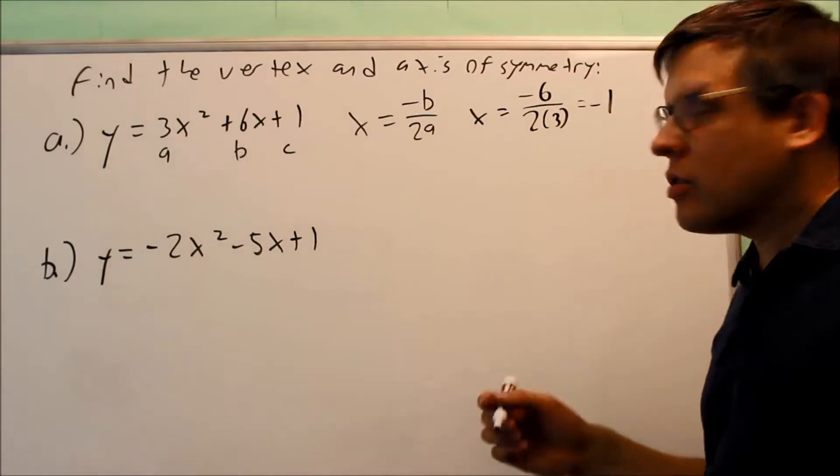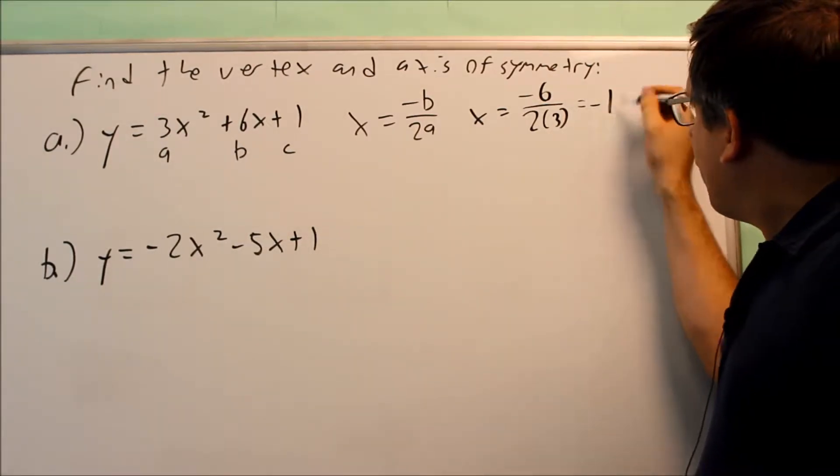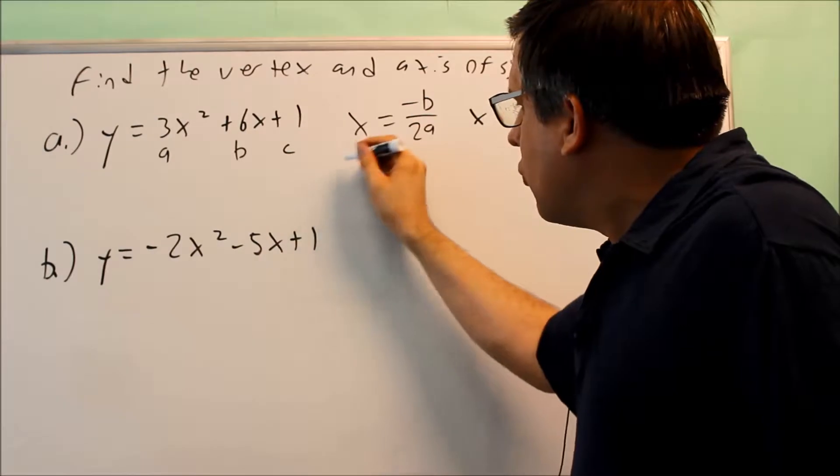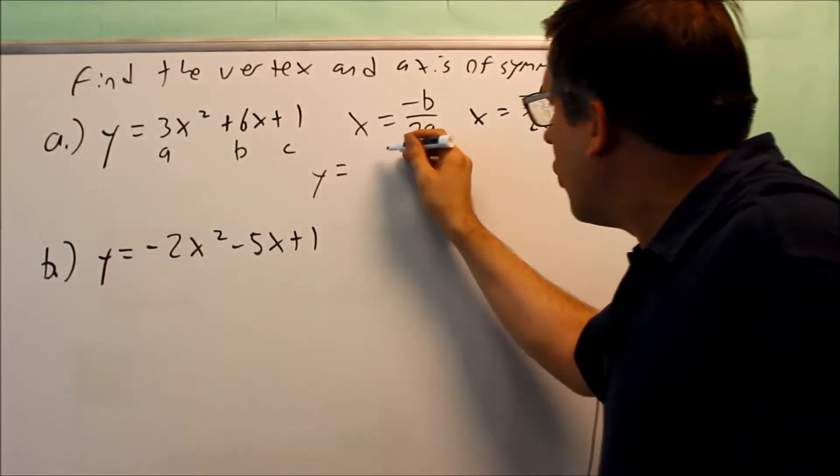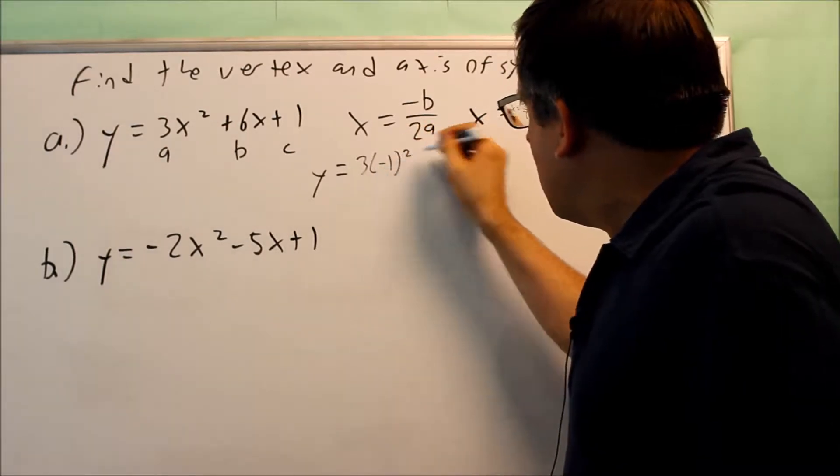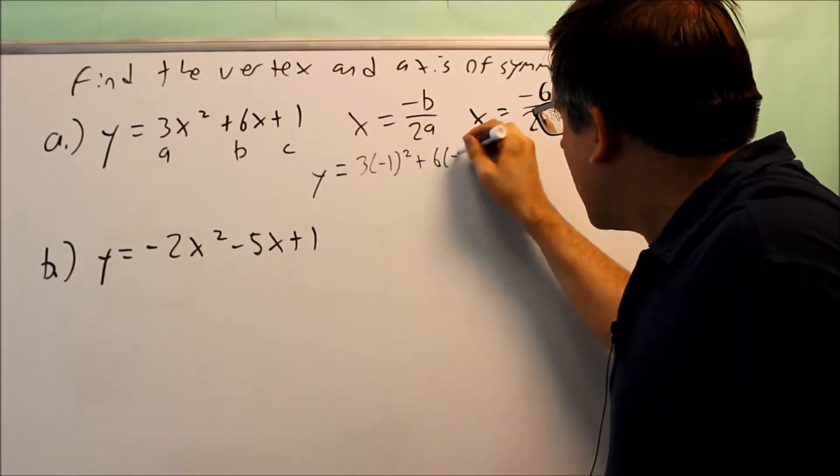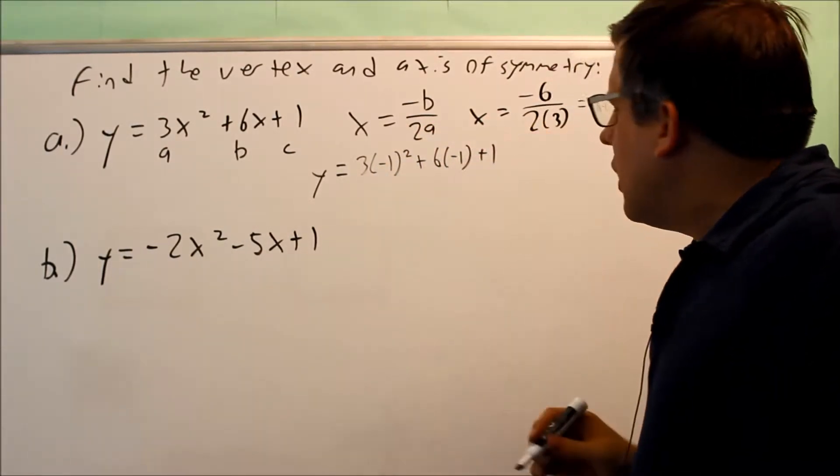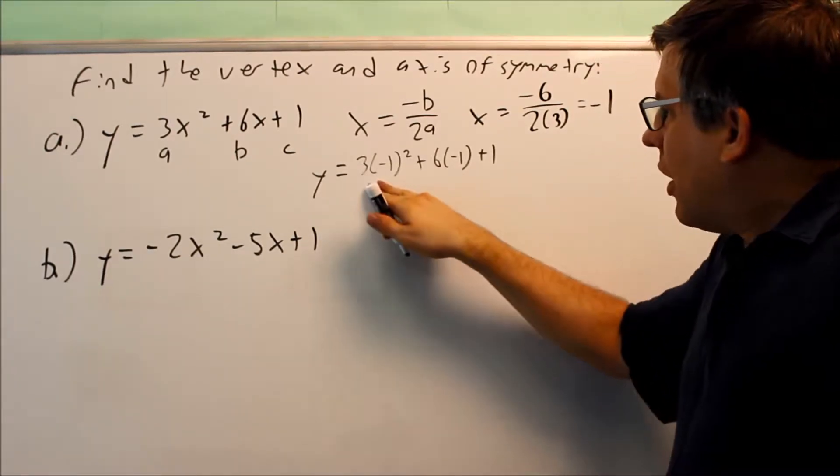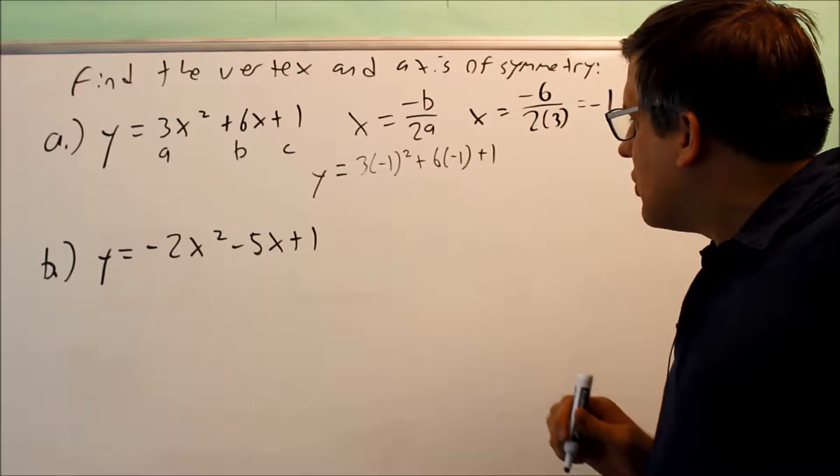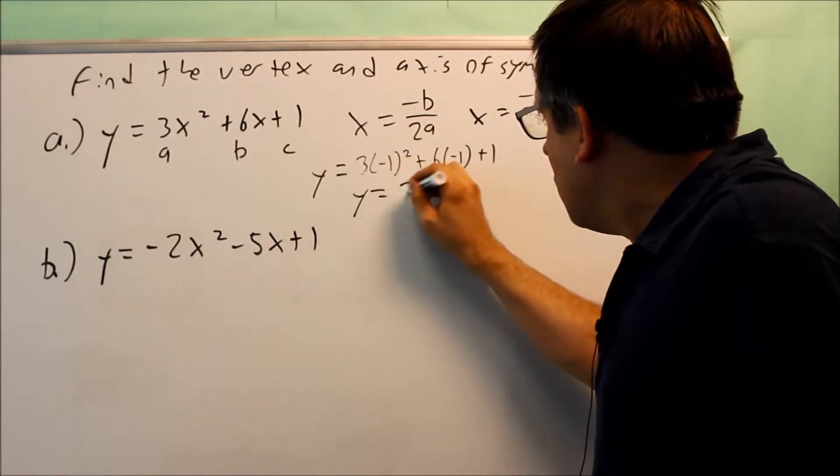Now a vertex is going to be an x and a y, so I have to also find the y-coordinate. To find the y-coordinate, what you do is you just put it back into the original one, so I'm going to put negative 1 in place of the x, so I put negative 1 in here, and then I'm going to simplify that. This gives me 3 minus 6, so negative 3 plus 1 gives negative 2.